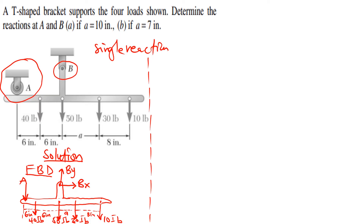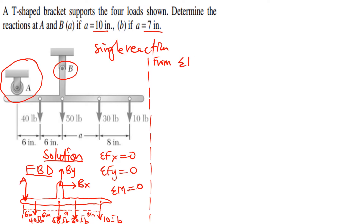We apply our equilibrium equations: summation of forces in x equals zero, summation of forces in y equals zero, and summation of moments about a specific point equals zero. From ΣFx = 0, choosing positive x to the right, we get only Bx, so Bx = 0. This is equation one.